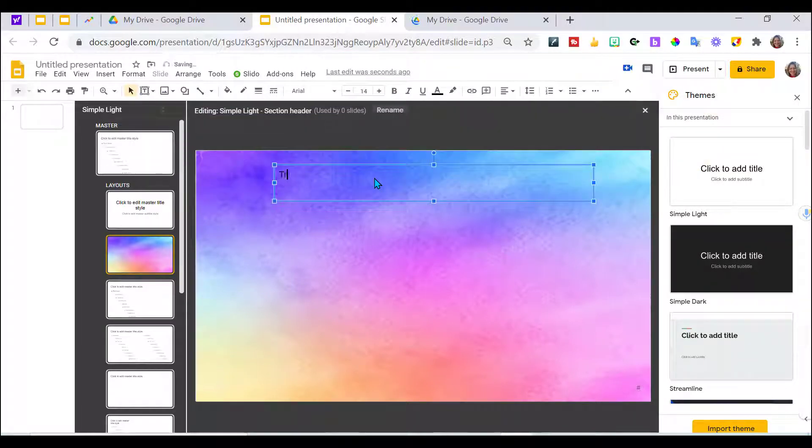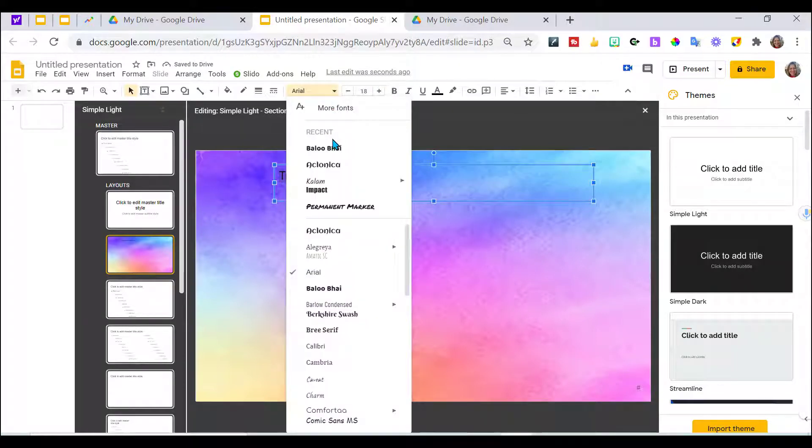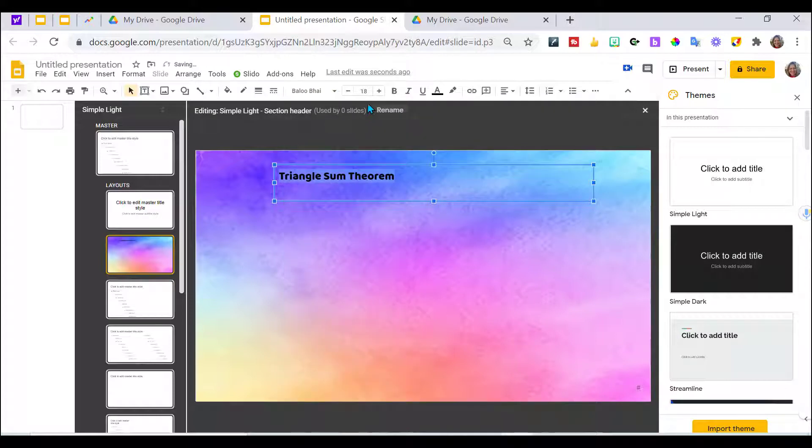So the title of mine is Triangle Sum Theorem. I'm going to highlight that by left-clicking and dragging over it. I'm going to increase the font. Oh, before I do that, I want to change the font to what I want. I like this nice bold font for my title. Then I'm going to increase the font.